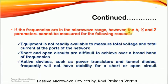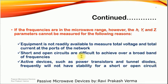If frequencies are in the microwave range, the H, Y, and Z parameters cannot be measured for three reasons. First, equipment is not readily available to measure total voltage and total current at the ports of a network. Second, short circuits and open circuits are difficult to achieve at higher or broadband frequencies. Third, active devices such as power transistors and tunnel diodes frequently do not have stability under short circuit or open circuit conditions. That is why we cannot use H, Y, Z parameters at higher frequencies.